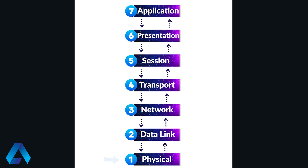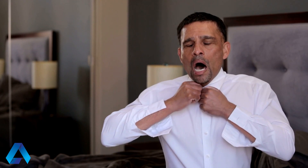Let us take a look at the first layer, the physical layer. This layer deals with the physical transmission of data over a network, such as the electrical, optical, or wireless signals that are used to send data. Think about getting ready for work in the morning — you put on your shirt, fasten your buttons, and these are physical objects that allow you to do one thing, which is get ready for work. In the same manner, network cables allow you to perform the task of sending data through a network.